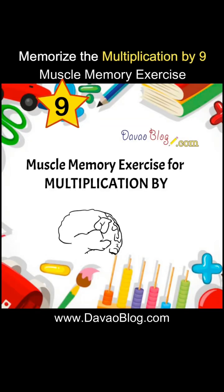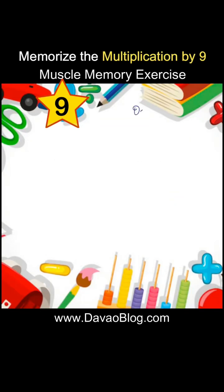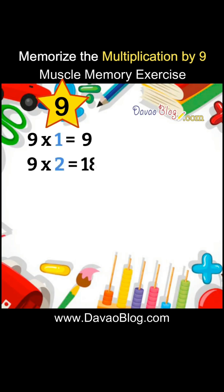Muscle memory exercise for multiplication by 9. 9 times 1 equals 9. 9 times 2 equals 18. 9 times 3 equals 27. 9 times 4 equals 36.